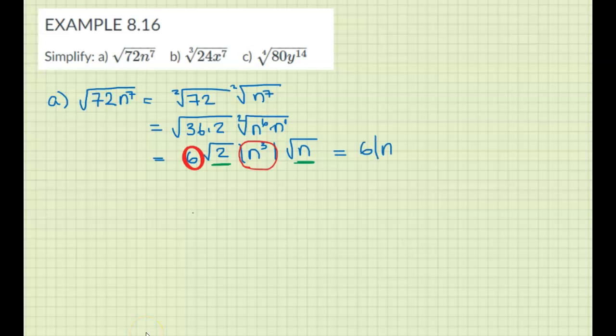So we have 6 absolute value of n cubed right in front, and then square root of 2n. So I can put these back together inside one radical sign. There we go.